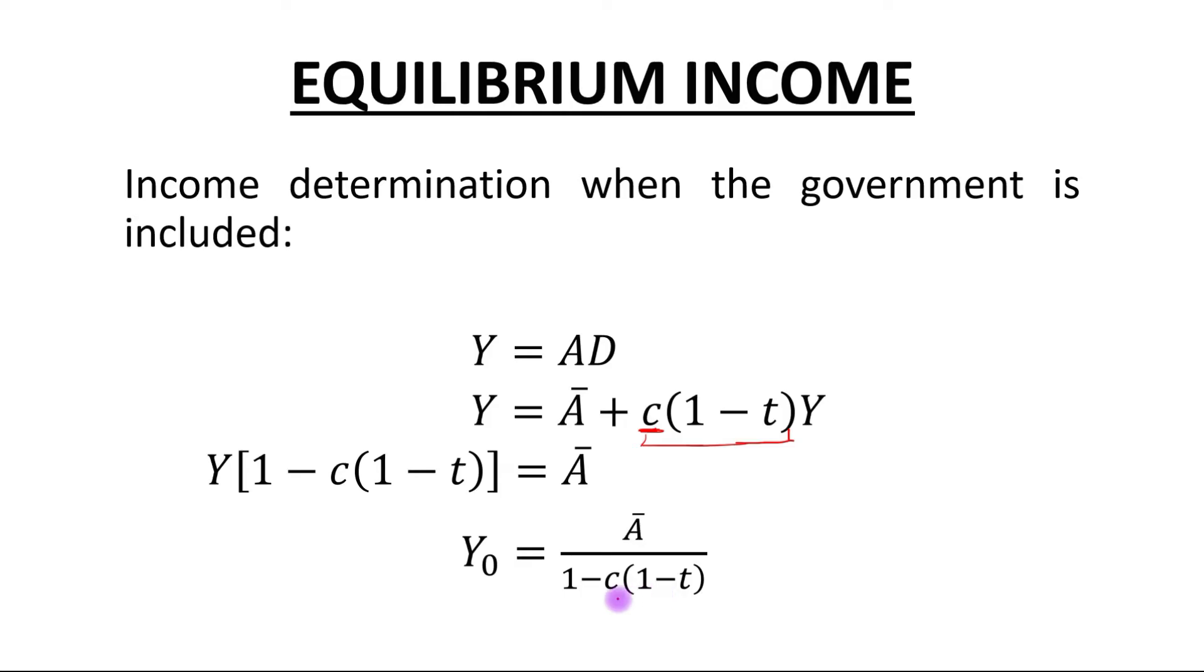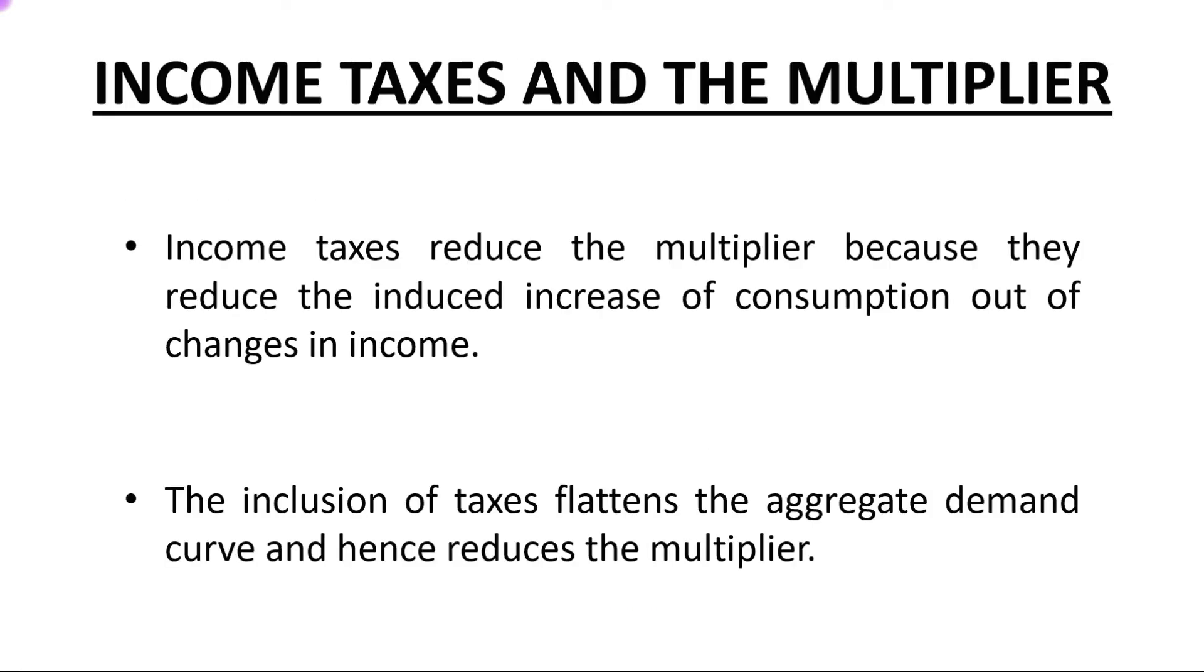Next topic is income taxes and the multiplier. Income taxes reduce the multiplier because they reduce the induced increase of consumption out of changes in income. The inclusion of taxes flattens the aggregate demand curve and hence reduces the multiplier.